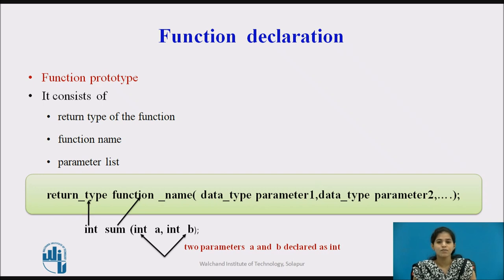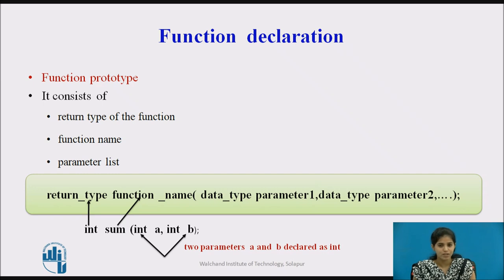When a function is declared to perform some sort of calculation or operation and is expected to provide a result, a return statement is added at the end of the function body. Return type specifies the type of value — either integer, float, character, or double — that the function is expected to return to the program that called it. If the function does not return any value, then the return type would be void.